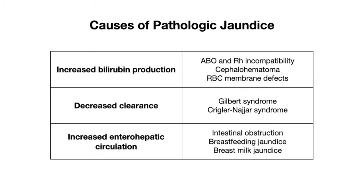Other causes of increased production include RBC membrane defects, such as hereditary spherocytosis. Decreased clearance of bilirubin can occur with Gilbert syndrome as well as Crigler-Najjar syndrome, which involve the UGT enzymes. Increased enterohepatic circulation can occur with intestinal obstruction — due to delayed excretion of bilirubin — as well as breastfeeding jaundice and breast milk jaundice.